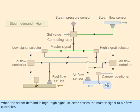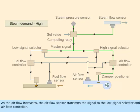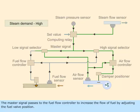When the steam demand is high, the high signal selector passes the master signal to the air flow controller. The air flow controller increases the air flow by adjusting the damper position. As the air flow increases, the air flow sensor transmits the signal to the low signal selector and air flow controller. The master signal then passes to the fuel flow controller to increase the flow of fuel by adjusting the fuel valve position.